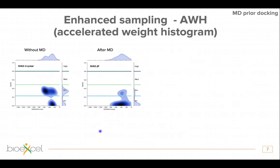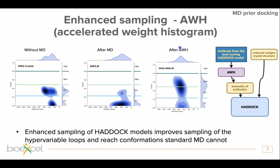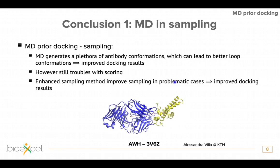However, this doesn't always work very well. In the antibody I showed you before, even after MD it seems rather bad — even worse than before. So we applied the accelerated weight histogram (AWH) enhanced sampling method, where the antibody is pulled apart from the antigen and samples the interface loops, providing even better conformational sampling. The results were significantly improved, with models now more in the medium quality range.